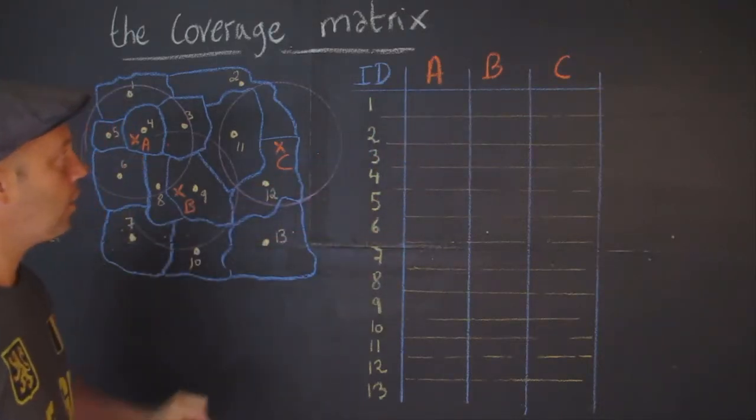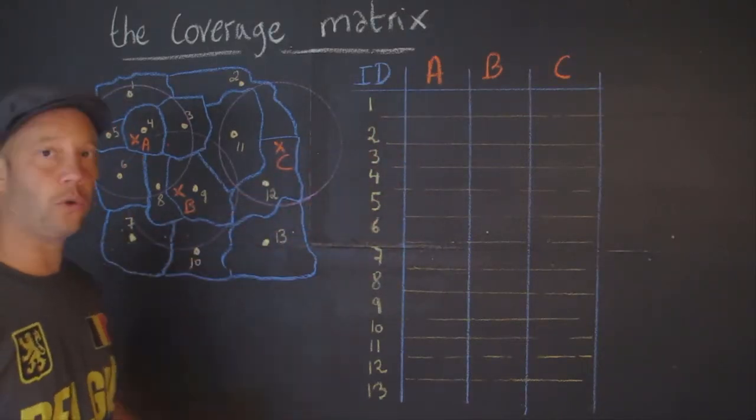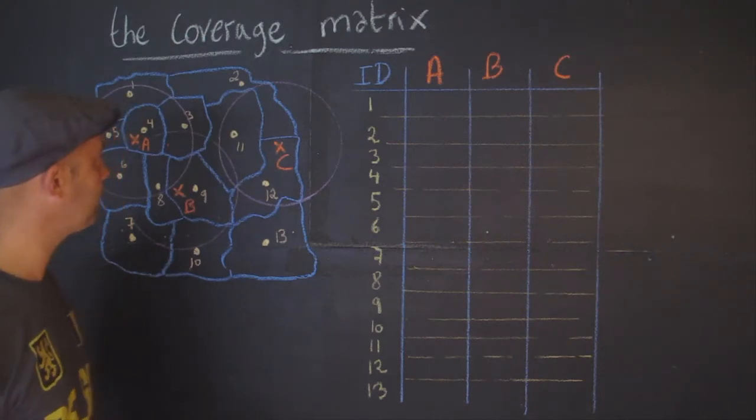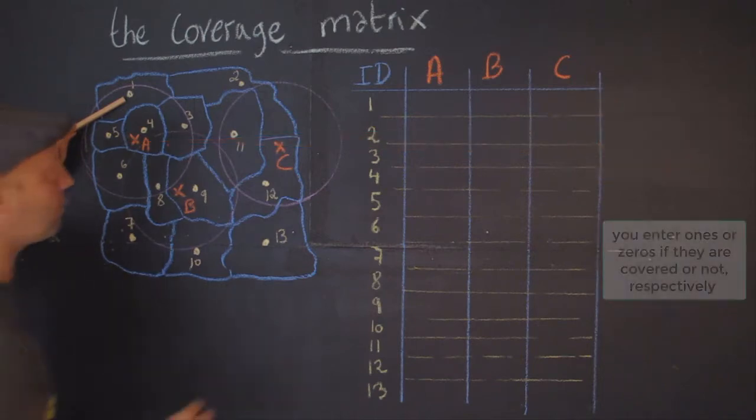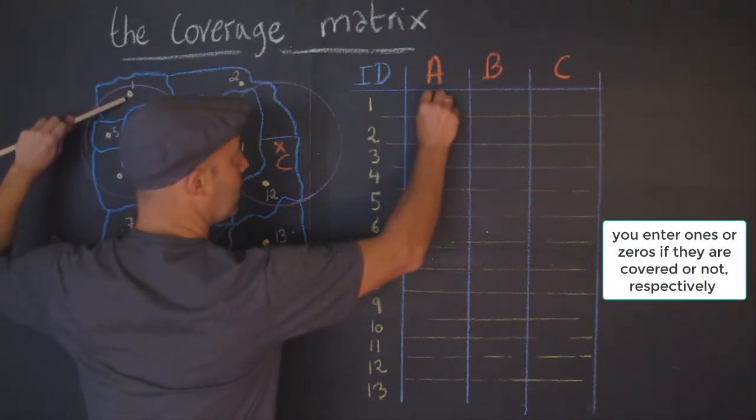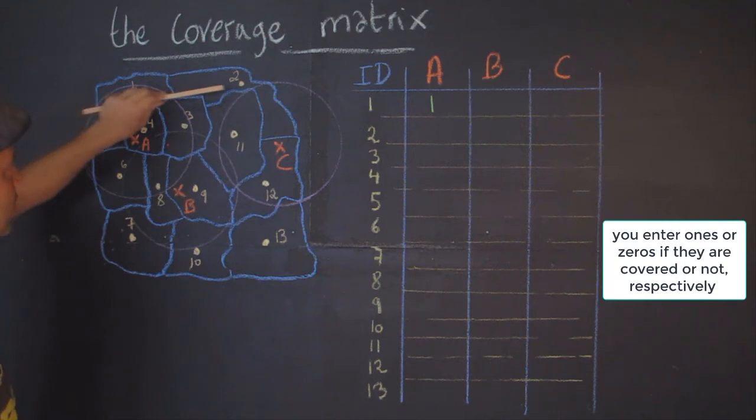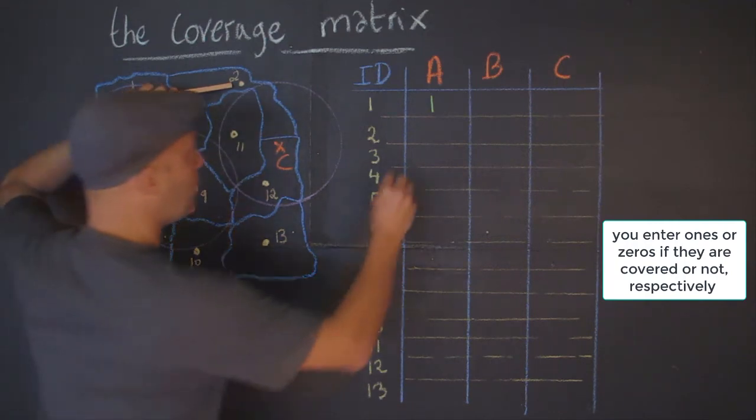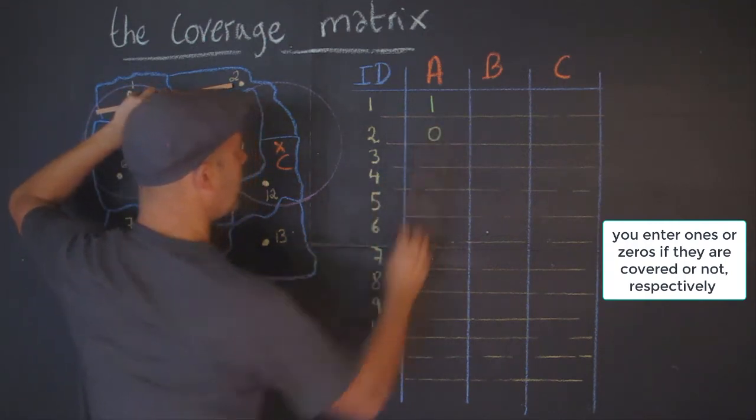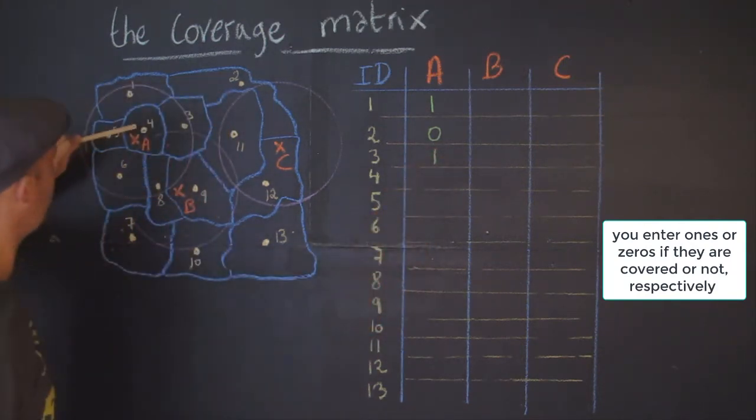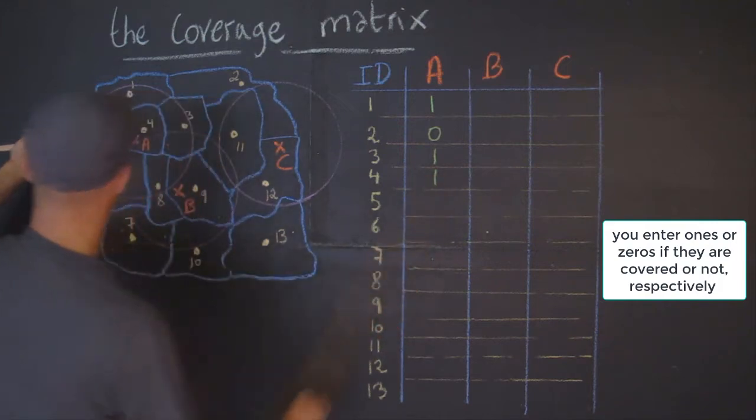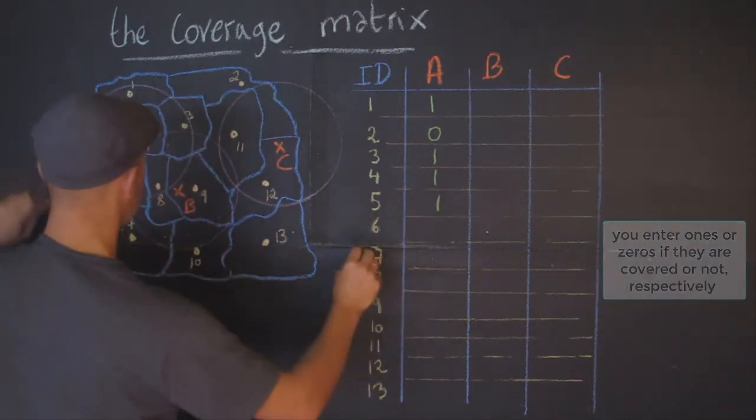The idea is that for each of these facilities, we are going to find out which demand nodes can be covered. Let's start with A. I'm here in A and I'm asking myself: if I look at the radius, which nodes fall within that radius? So one, of course, then we put a one. How about two? Two is over there, outside, so then we'll put a zero. Then here you have three, that's in. How about four? Four is in. How about five? Five is in. How about six? Six is in.